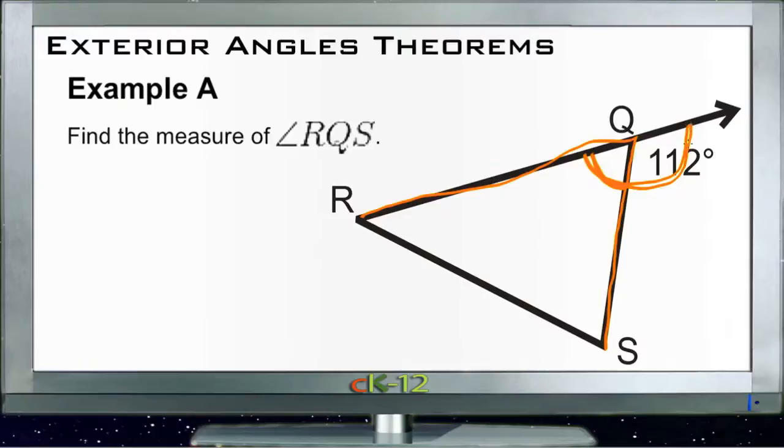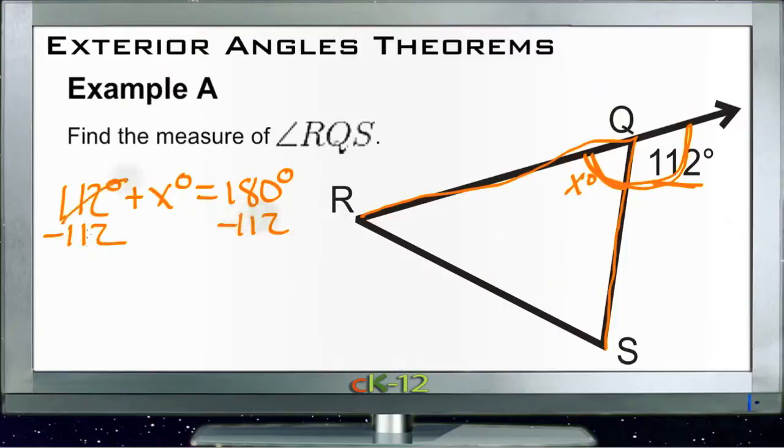So if this portion is 112, then angle x, which we don't know yet, would be the portion that's left. So we have 112 degrees plus x degrees equals 180 degrees. Then we subtract 112 from both sides, these cancel, and we get x equals 68 degrees. So that tells us that our missing angle RQS equals 68 degrees.